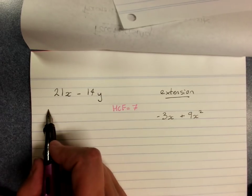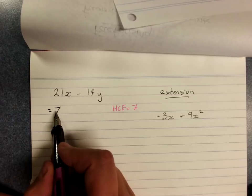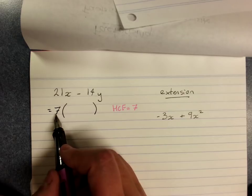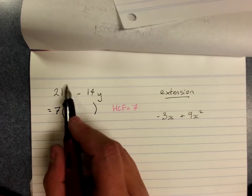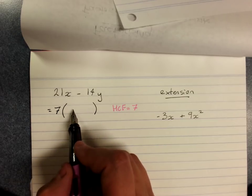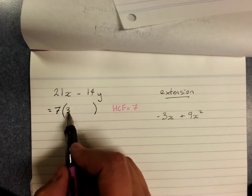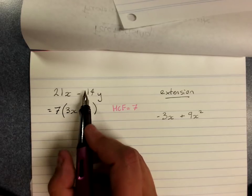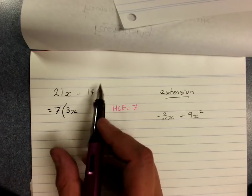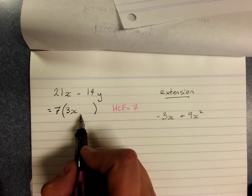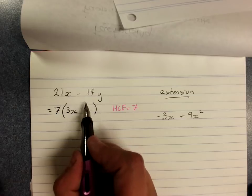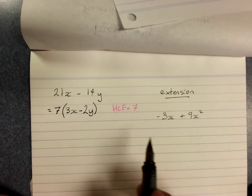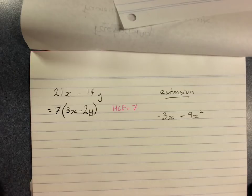So to factorize this, we put an equal sign. The highest common factor out the front. Factors come in pairs that multiply to get this. 7 times what gives me this? It would be 3. 7 times 3 gives me 21. And the x. Now we're going to have a minus. Because 7 times what gives me minus 14y? It will be minus 2y. You could do a check with that if you wanted.